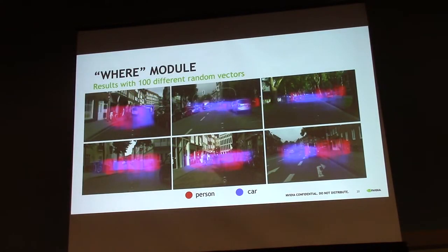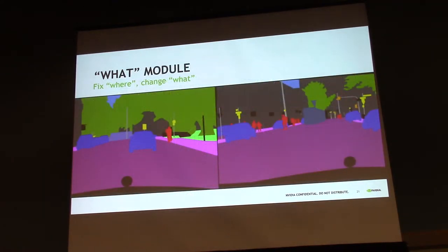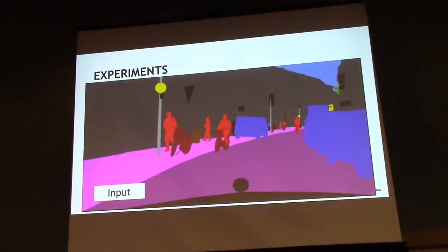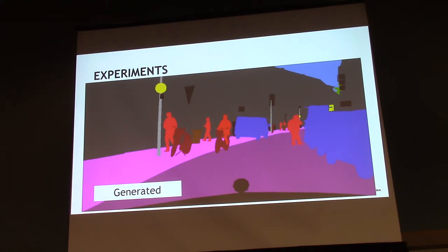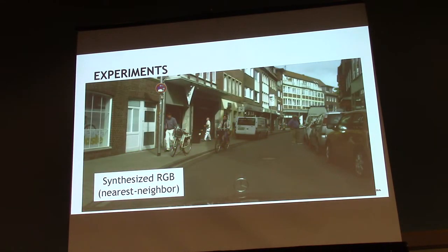Let's look at some experimental results. Here are results from sampling 100 different random vectors. Red is for the person and blue is for the car. The person is usually placed on the sidewalk and the car usually on the road. You can also fix the where-vector and change the what-vector to synthesize differently shaped persons at the same location. This shows one full cycle: synthesizing an RGB image from the semantic map. You insert a person on the right of the semantic map, then use off-the-shelf image-to-image translation to synthesize the RGB image. Alternatively, since you know the shape of the inserted object, you can find the nearest neighbor in your database and bring those RGB pixels in.